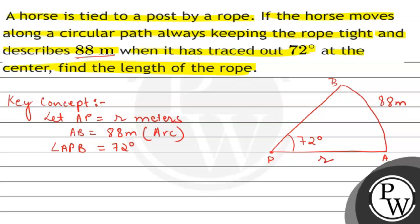Here we have to find the length of the rope. So for that we know that l equals r theta, where angle APB equals theta. So now we will solve the question according to this, as we know theta is equal to 72 degrees.